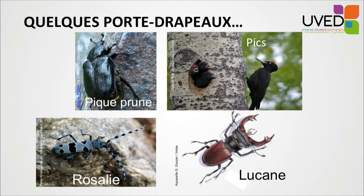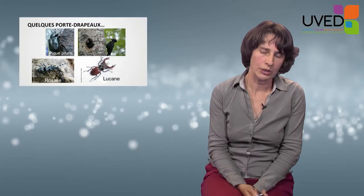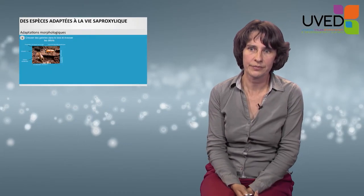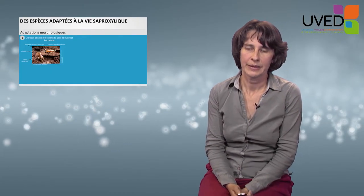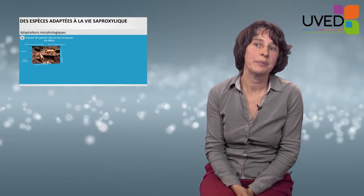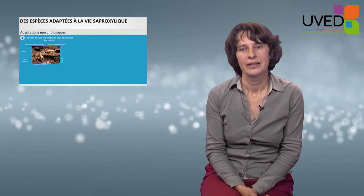We also have beetles. We have the Rosalia alpina, a beautiful insect whose larvae and adults can be found on ash stumps. And finally, we have the stag beetles, which can be found on oak stumps. All of these species are adapted to life on dead wood.